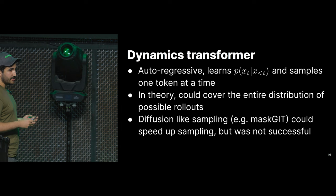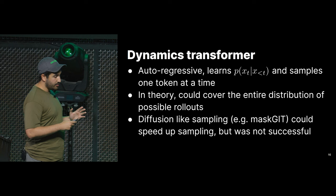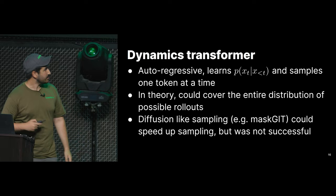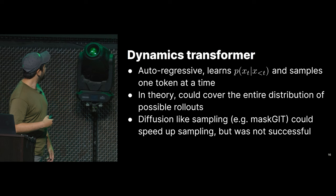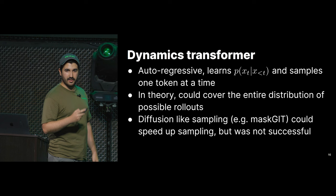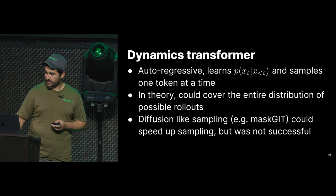In theory this is really powerful because you could cover the whole distribution of your training set — the whole distribution of possible rollouts given a context of a few frames. This can imagine any type of future, which is desirable because you don't want to restrict what happens next. We tried a few things to speed up this autoregressive sampling since it's a little slow — diffusion-like sampling, fancy masked git techniques — but we didn't really succeed yet. We'll keep trying.